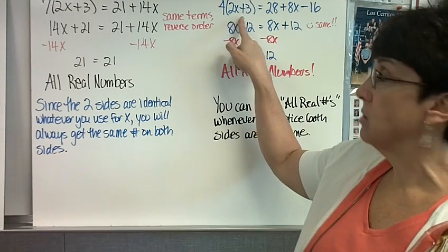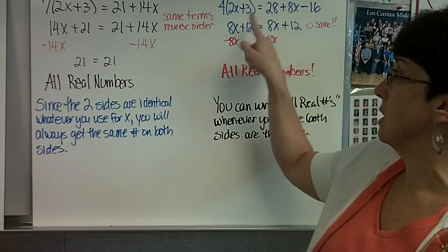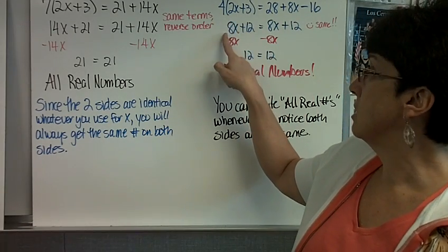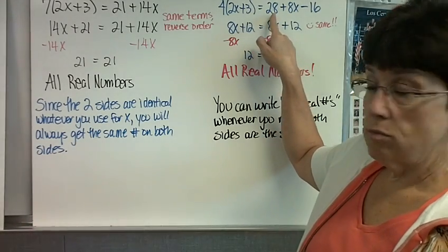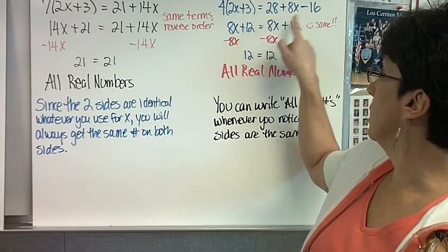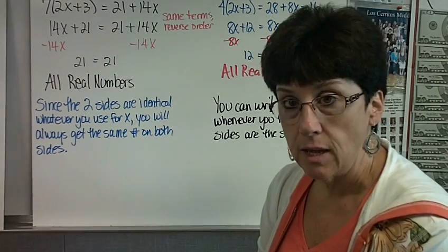Four times the quantity of 2x plus 3 equals 28 plus 8x minus 16. Do the distributive property. Four times 2x is 8x. Four times 3 is 12. Combine like terms. 28 minus 16 is 12. So I bring that 8x plus 12. Oh, my gosh, it looks exactly the same.